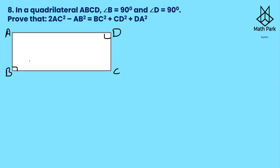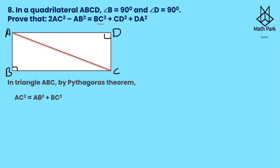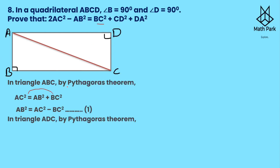Moving to question number 8: In quadrilateral ABCD, angle B = 90° and angle D = 90°. Prove that 2AC² − AB² = BC² + CD² + DA². Let us join diagonal AC. By Pythagoras theorem in triangle ABC, AC² = AB² + BC². Rearranging: AB² = AC² − BC². This is equation one.